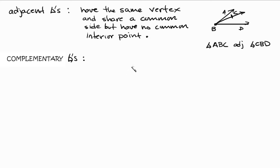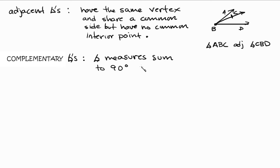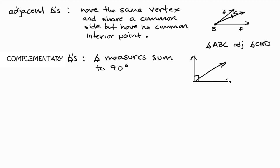Complementary angles are two angles whose measures sum up to 90 degrees. So we can write it like this: angle measures sum to 90 degrees. For instance, if you have a 90-degree angle, complementary angles would be the two angles that you add together to make that 90-degree angle.